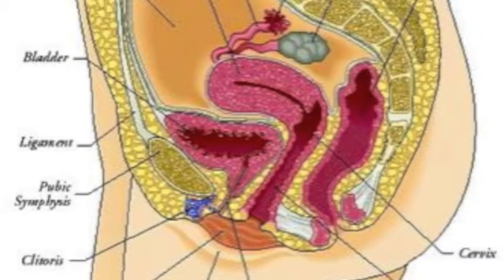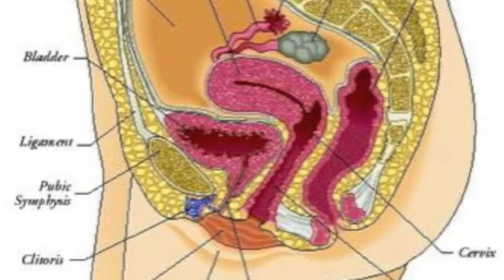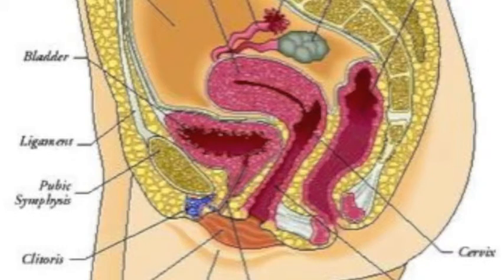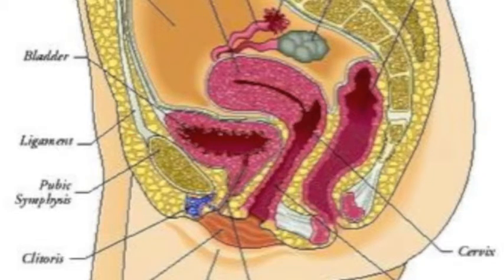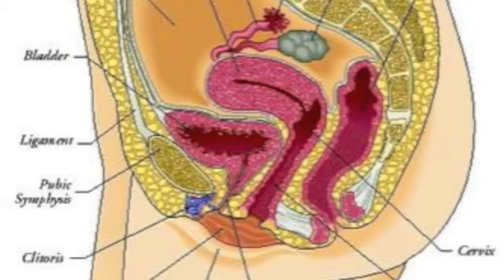There is a symbiotic relationship between a type of bacteria called Doderlein's bacilli and the female human body. The Doderlein's bacilli colonize the vagina, just like E. coli colonizes the intestinal tract, and they feed on the glycogen in the mucus. As they metabolize the glycogen, they release lactic acid as a waste product, which acidifies the vagina. The bacilli get nourishment, and the female gets acidification of the vagina, which serves as a defense.